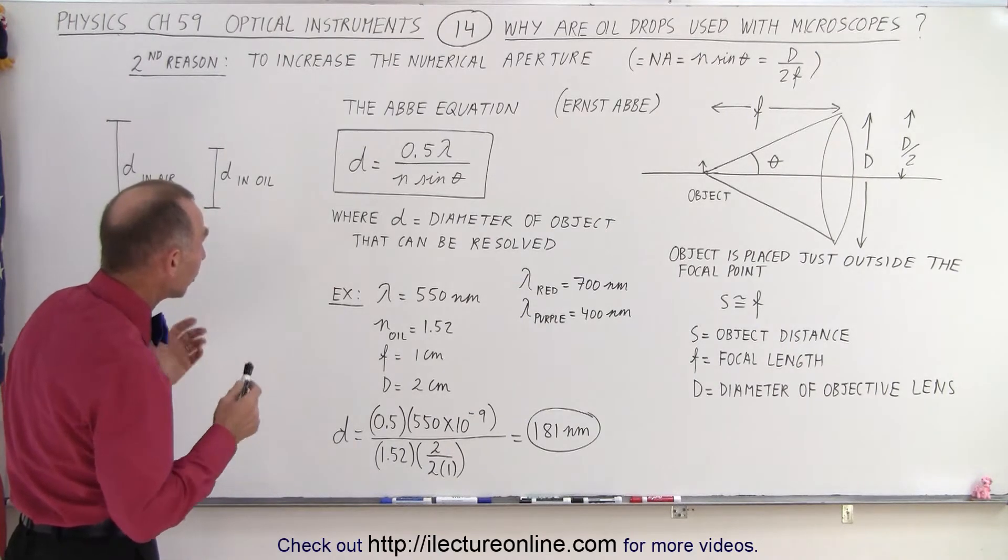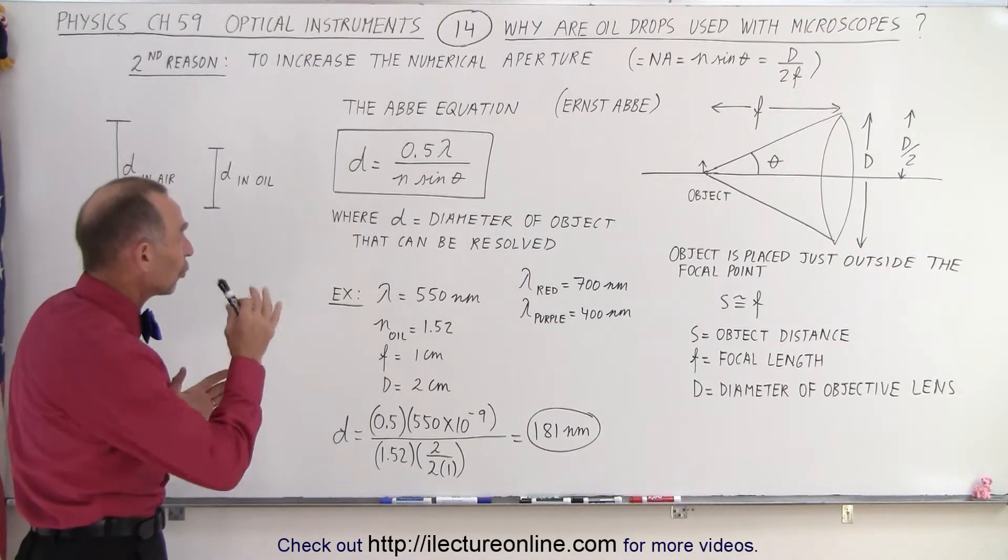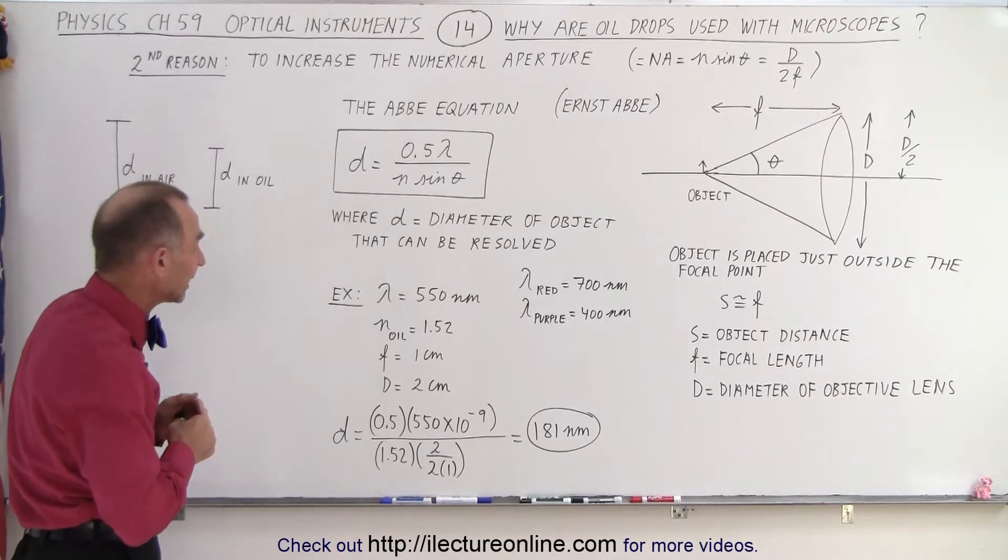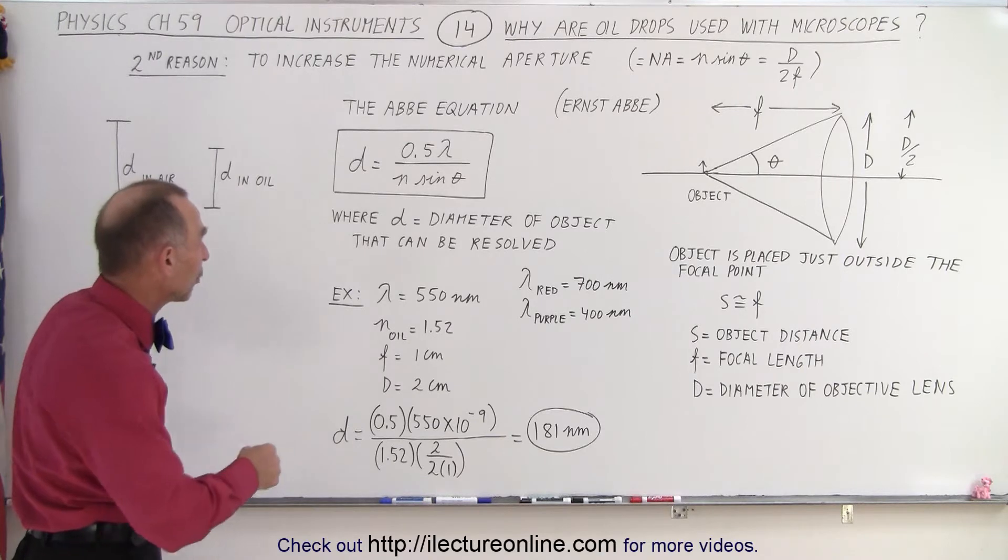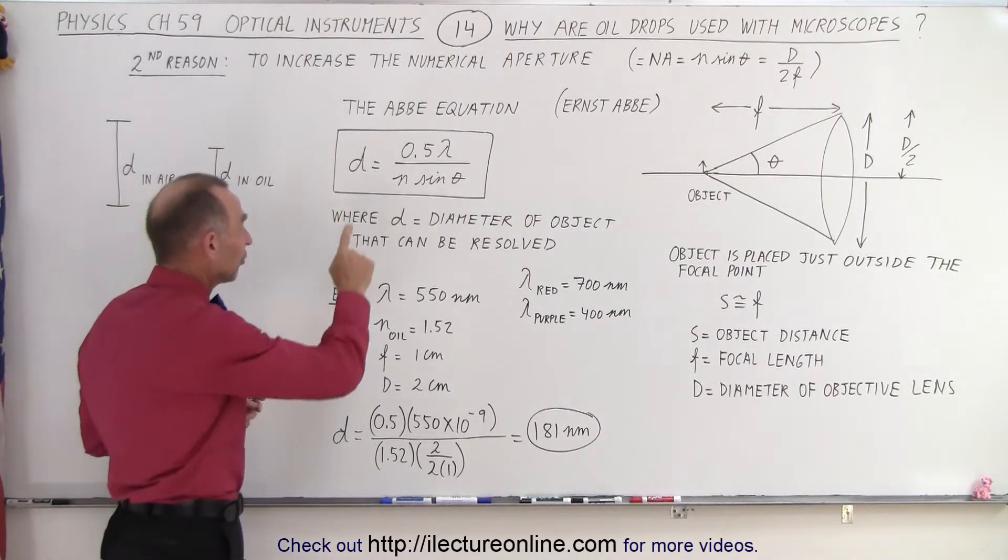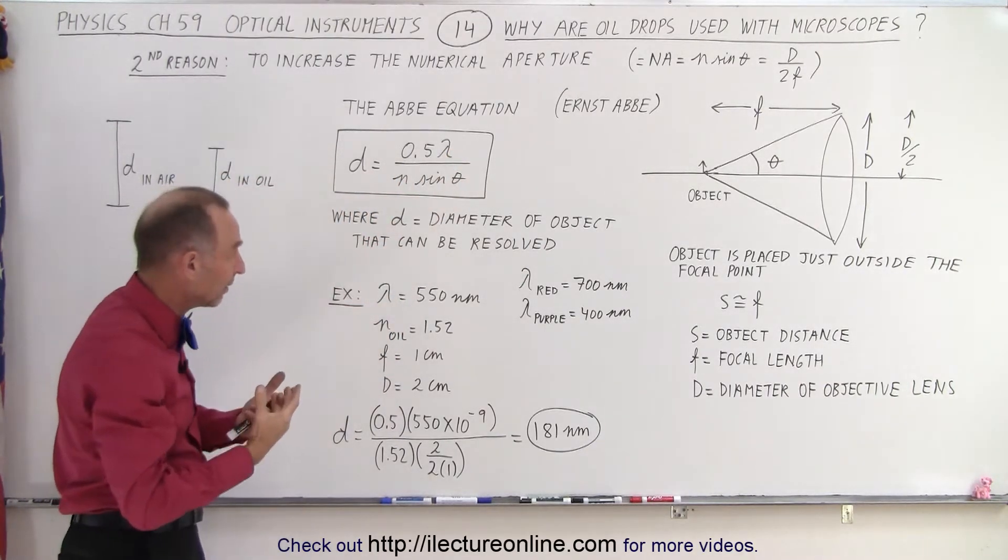So when we take a look at something that's called the Abbey equation. Ernst Abbey, which was a physicist that lived in Germany back in the 19th century, he came up with the equation that the diameter of the object that can be viewed clearly is equal to 0.5 times the wavelength of the light that's being looked at,